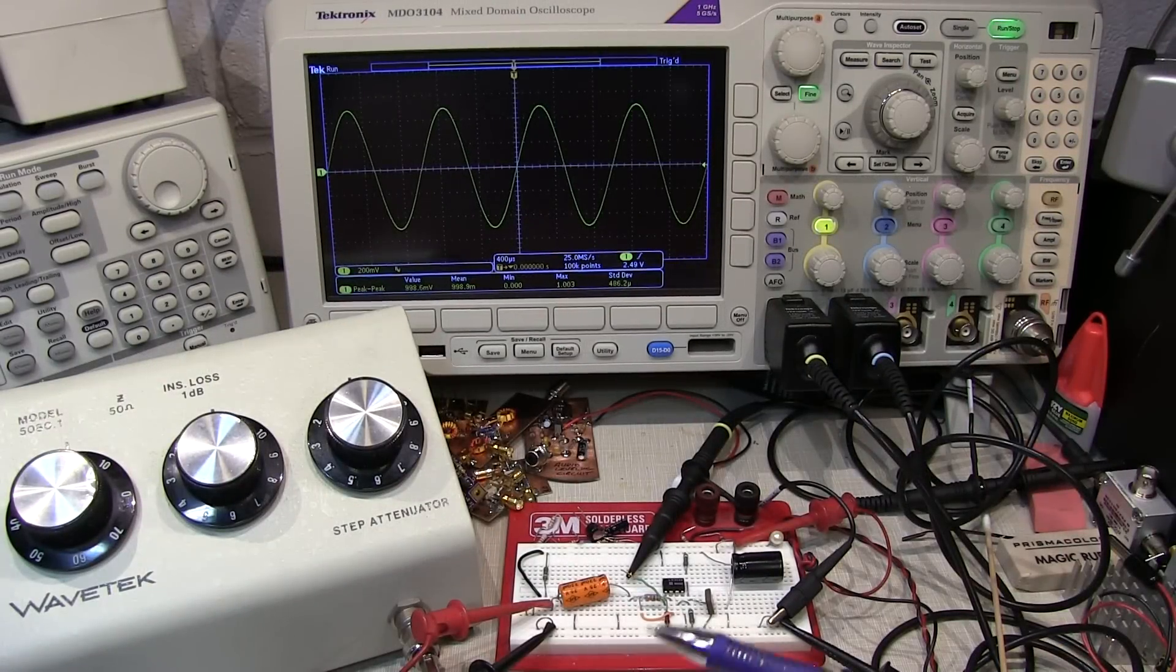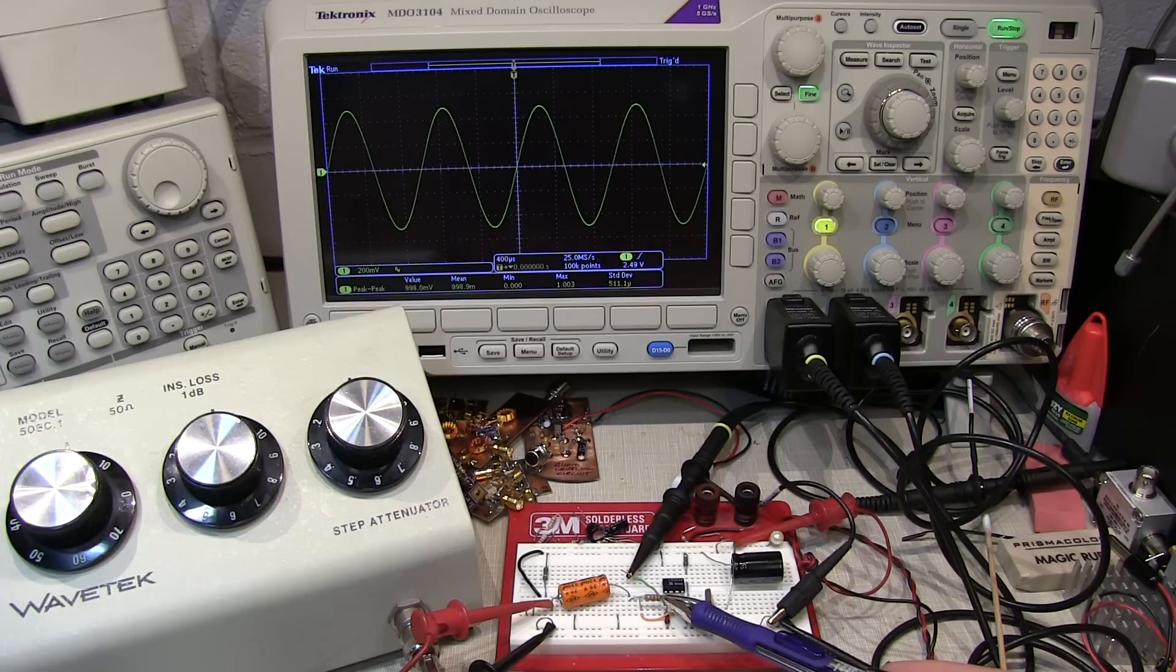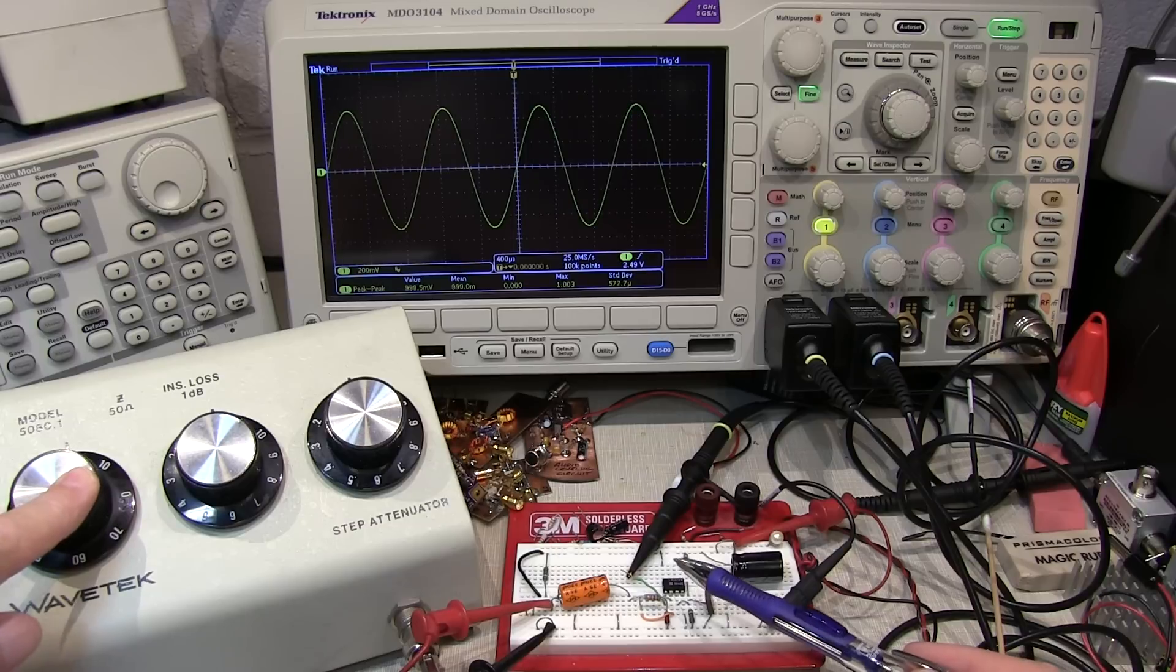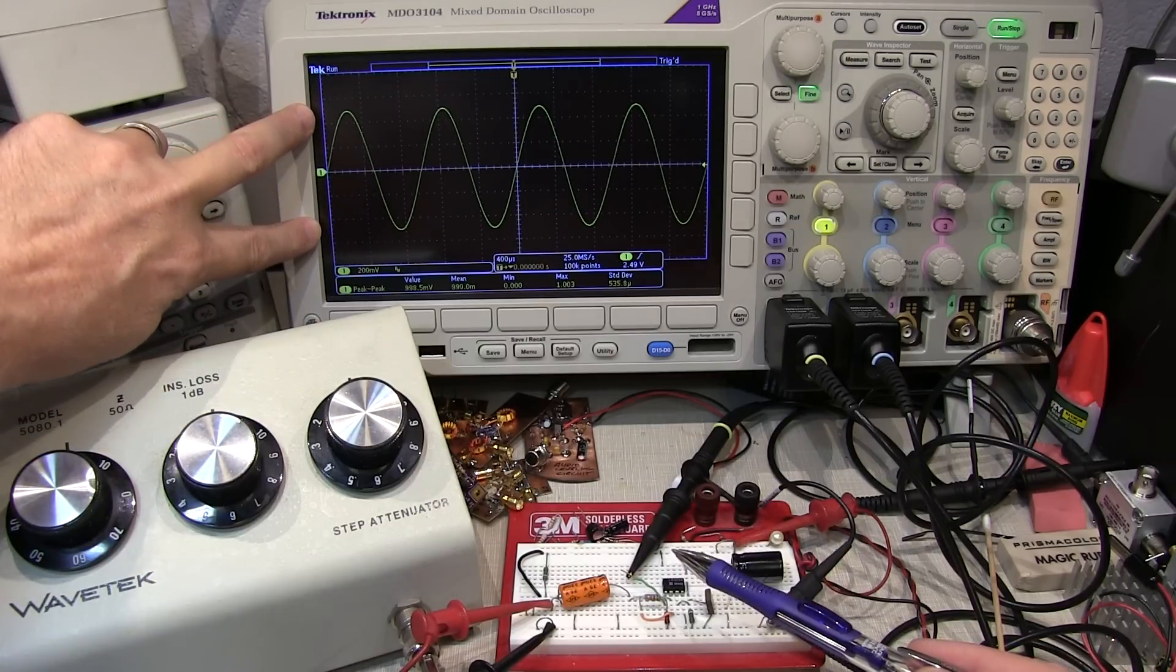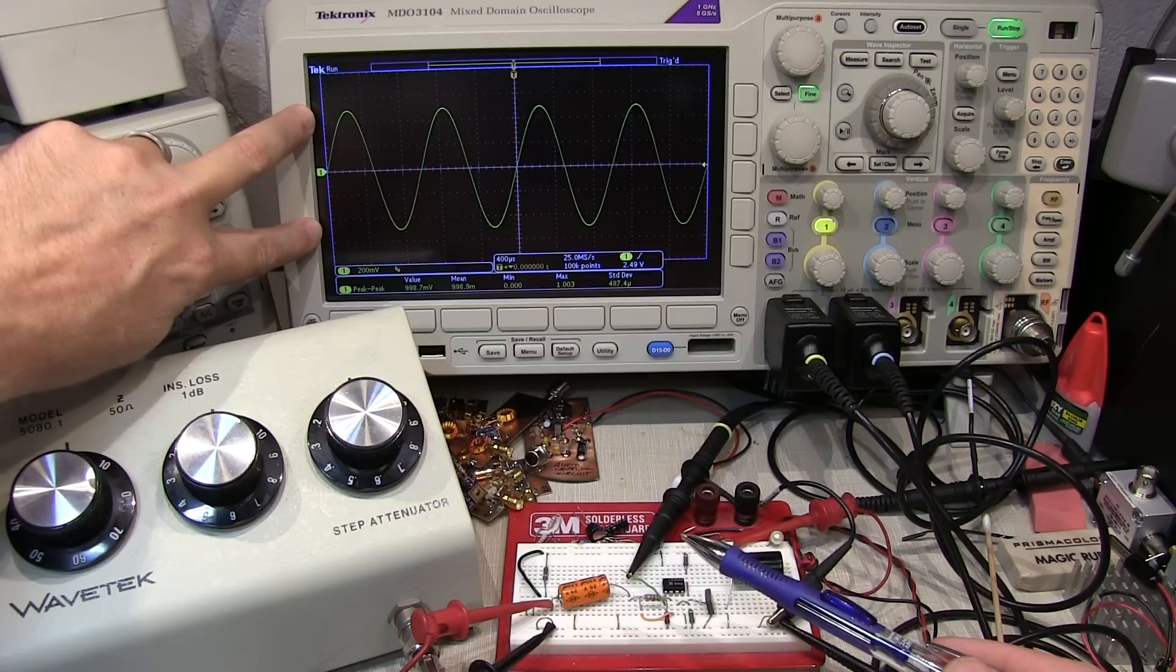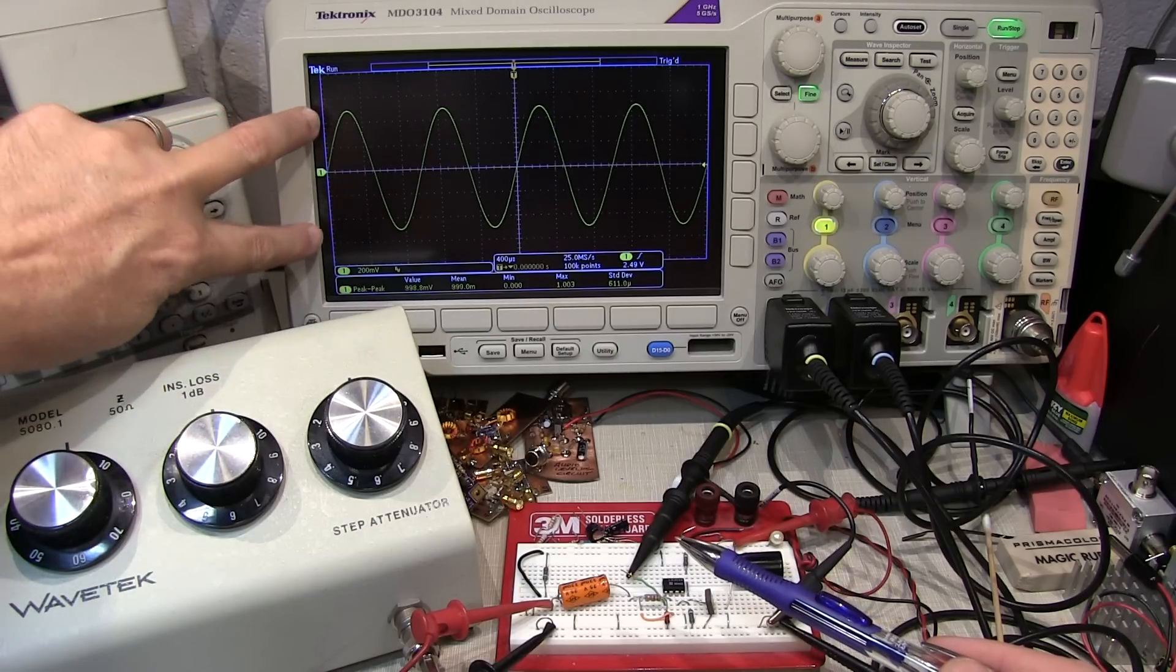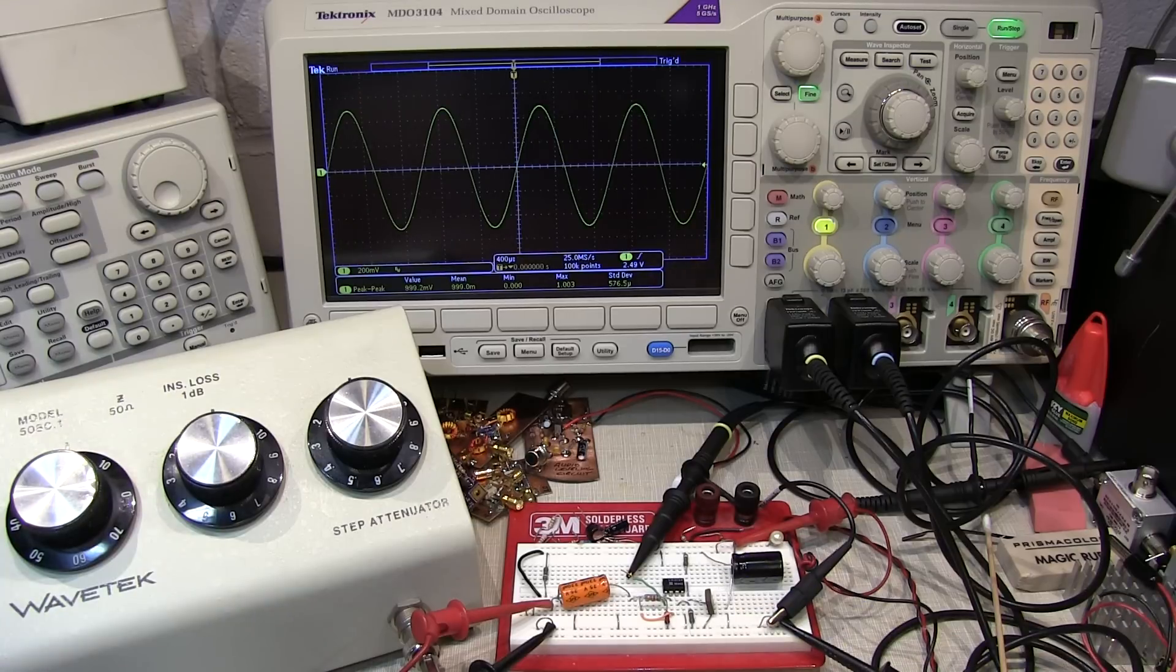We'll measure the bandwidth of this op amp under a couple of different gain conditions. Right now I've got it configured with a 10k feedback resistor and that gives us an inverting gain of 10 or 20 dB. I've got the attenuator set up so that the output amplitude of the amplifier is 1 volt peak to peak.